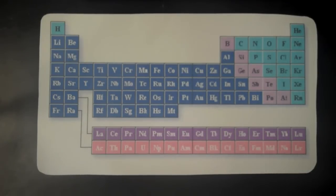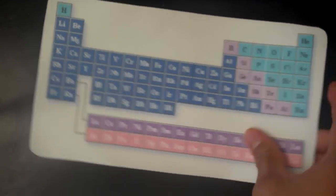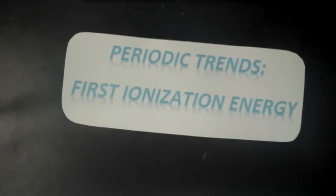The periodic table doesn't just arrange elements in order of increasing atomic number. It also shows the trends in certain aspects and characteristics of atoms, aiding us in making assumptions, explanations, and calculations in chemistry. Today we'll be focusing specifically on the periodic trends of the first ionization energies. These trends allow us to calculate the energy required in the formation and association of compounds, and are also an important step in making Hess's law calculations.